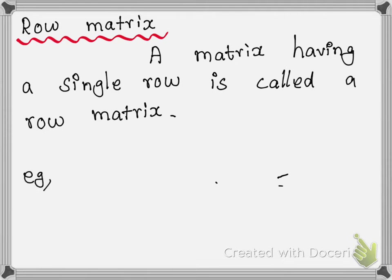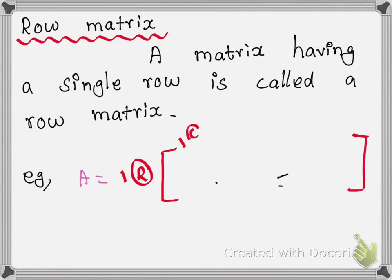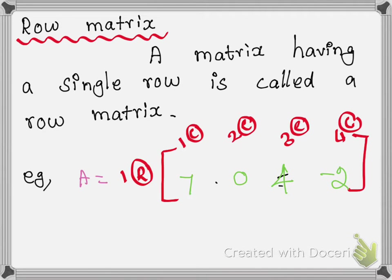Example: matrix A equals — only one row. How many columns are there? Row-wise, only one row. The elements are 7, 0, 4, minus 2. We have to denote the row. Only one row and four columns, so it is a matrix of order one cross four.